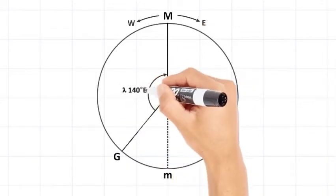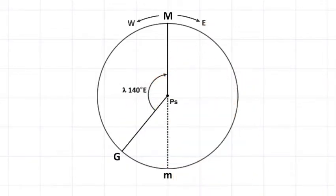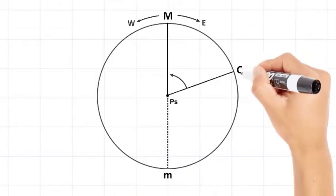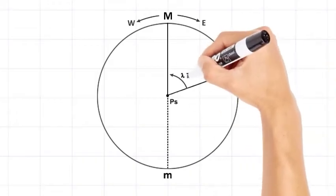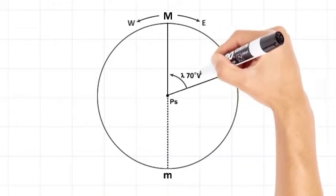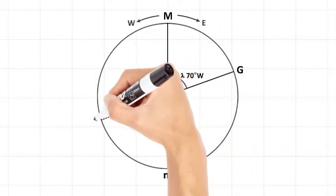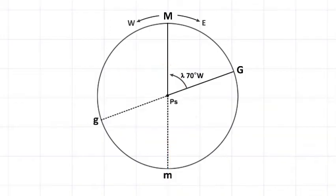For example, if an observer's longitude is 140 degrees east, G is west of the observer. Similarly, if an observer's longitude is 70 degrees west, G is east of the observer. The lower branch of the Greenwich celestial meridian may be indicated as a dashed line and labeled lowercase g.